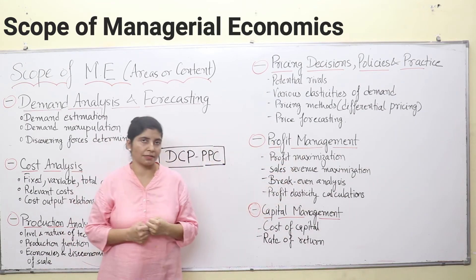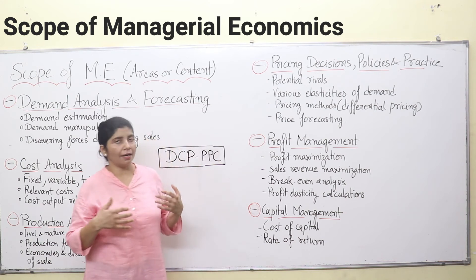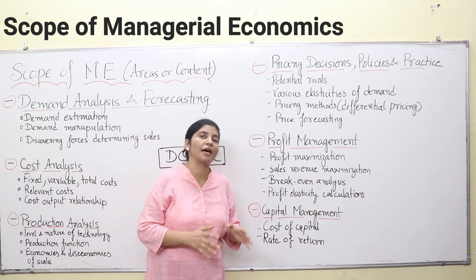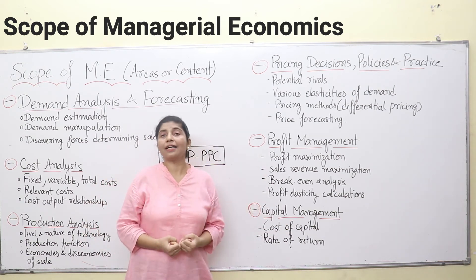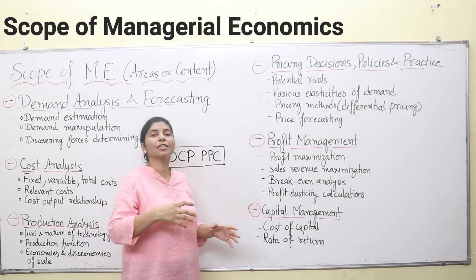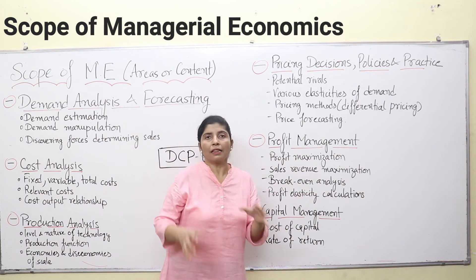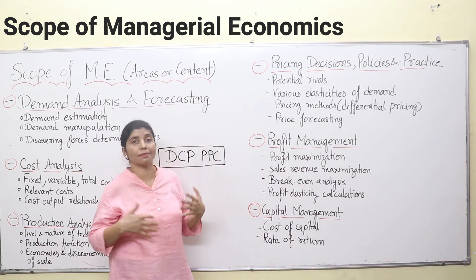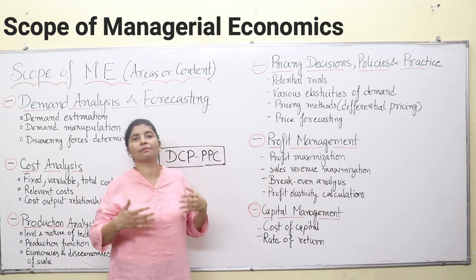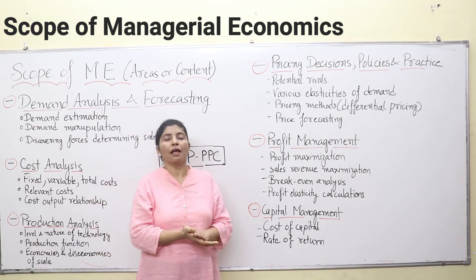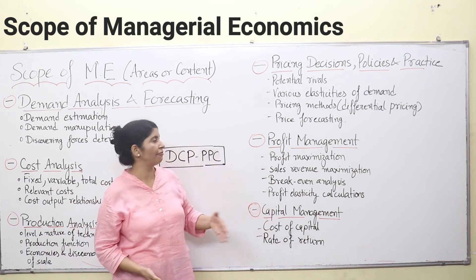Then, profit management. If you are doing business and earning profit but not managing it properly, then your business is destined to fail — you will incur losses in future. So a manager has to manage his profits and reinvest them into the business to gain maximum profits in future and expand revenue as well. Profit maximization is the basic motive of any business, and managers have to maximize profit by different methods. Second, sales revenue maximization — to maximize profit, you have to maximize your sales revenue. The higher the difference between your cost and revenue, the higher your profit.